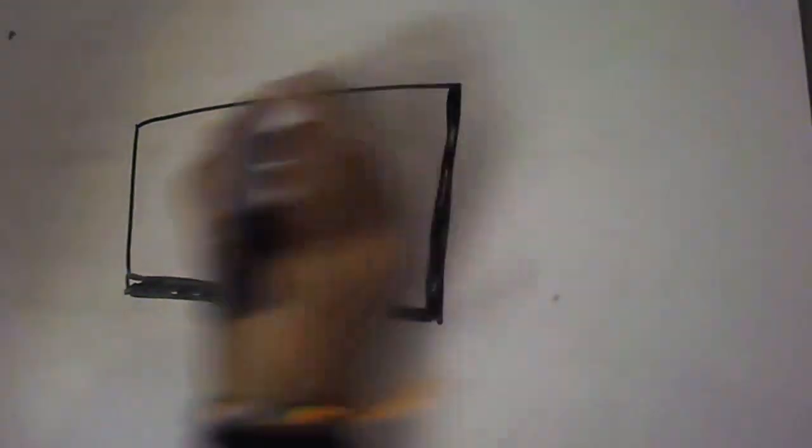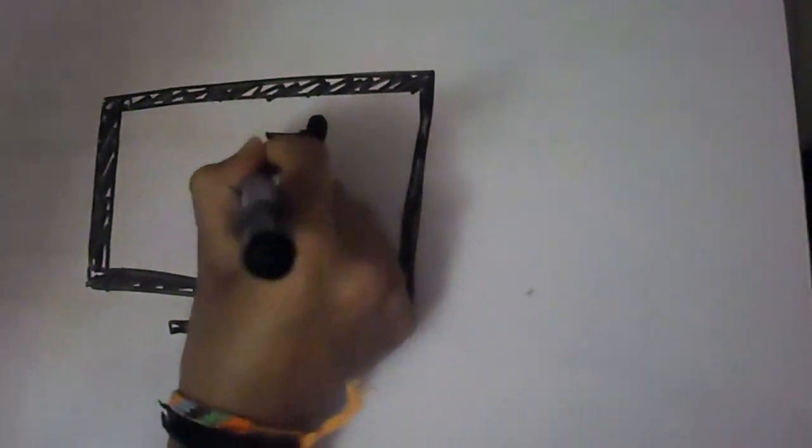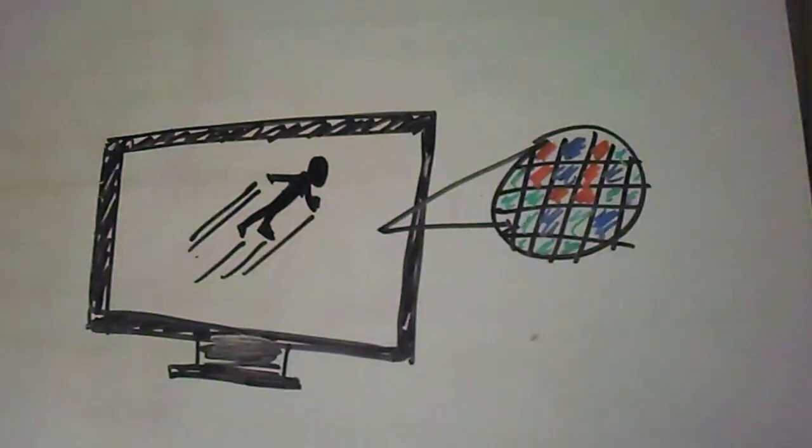Guess what plasma TVs use? Plasma TVs work with the plasma lighting up through a color grid of pixels to create the fully colored moving images of Tony Stark in his Iron Man suit zipping through the sky.